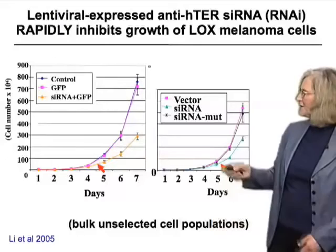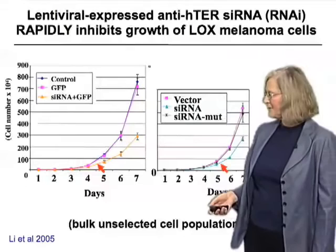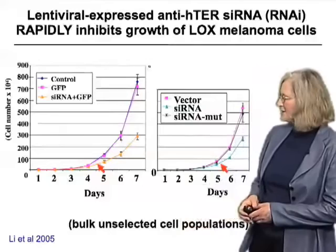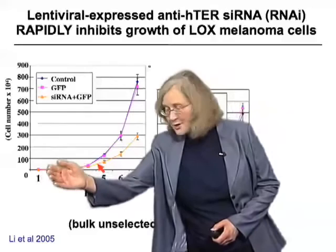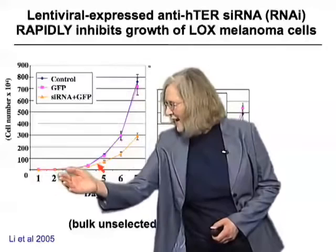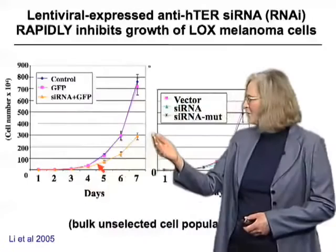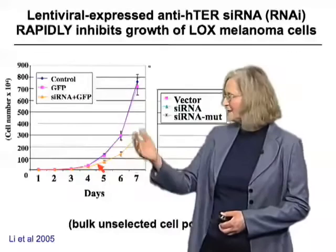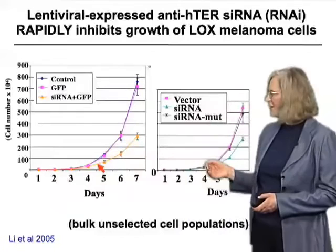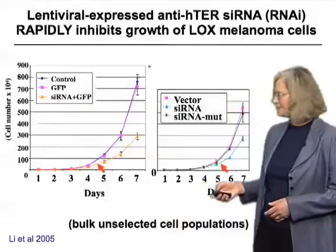This was done on bulk unselected cell populations. The cells were a melanoma cell line that normally has very long telomeres. The significance of using bulk unselected populations is that you could introduce the siRNA at day zero, and without any selection get something like 80 to 90% of the cells receiving this construct. The ones that did grow out were that low percentage that didn't receive the construct — so the effect is actually even stronger than the curves indicate.